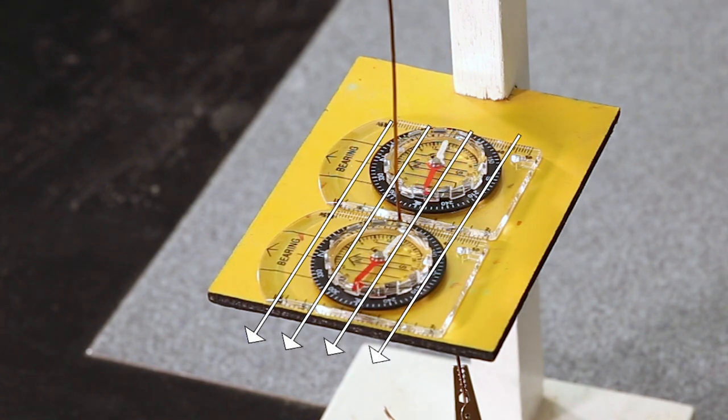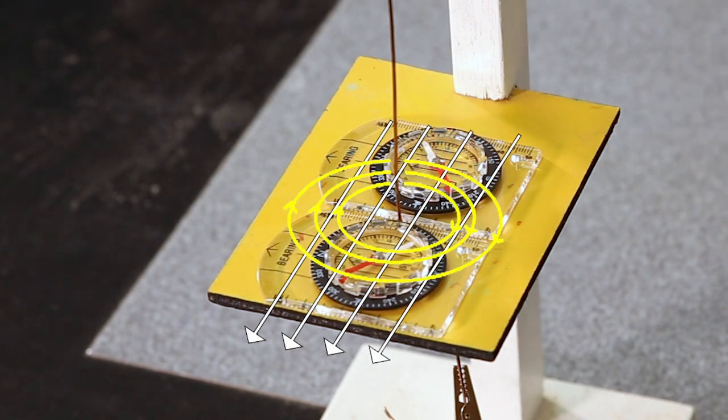So if there was no magnetic field of the earth those needles would be lovely parallel to the wire. But because of the magnetic field of the earth they're only moving a certain amount.